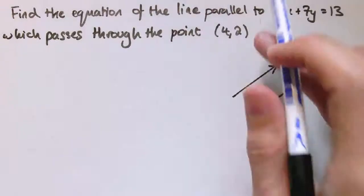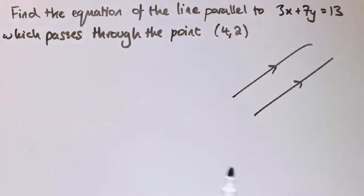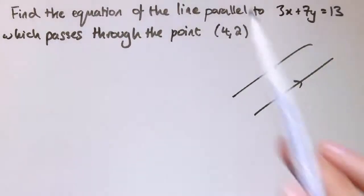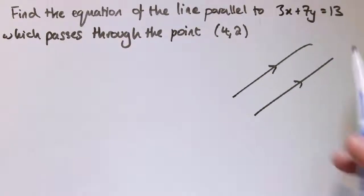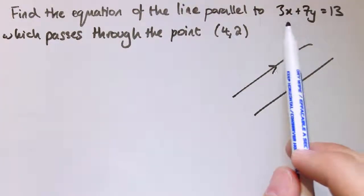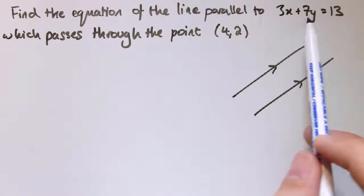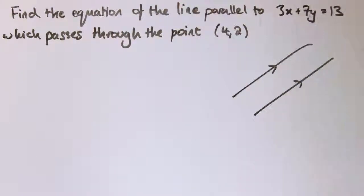When you've got an equation in this form, 3x plus 7y equals 13, you've got to think about which values determine the gradient and which determine the y-intercept. It's not in the form y equals mx plus c here, but hopefully you can see that the 3 and the 7 are going to determine the gradient because they are with x and y.